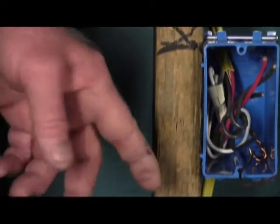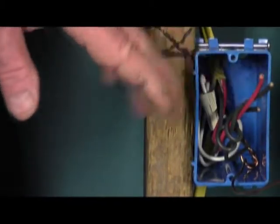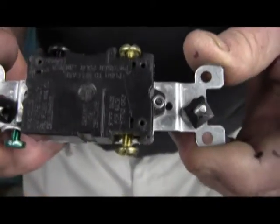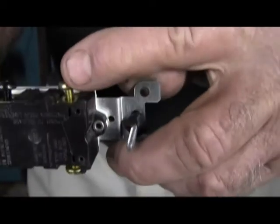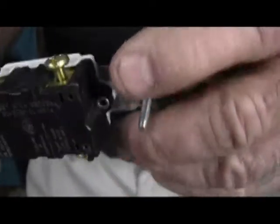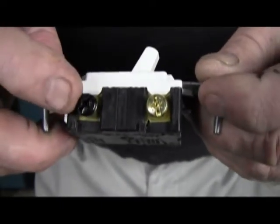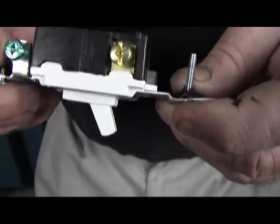So let's go ahead and install that switch. This is a three-way switch. You'll see that you have two copper colored screws, you have one black screw right here, you also have a ground.